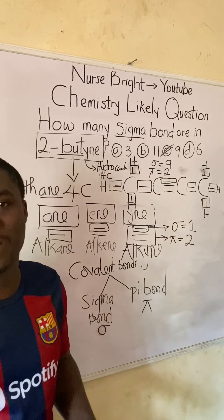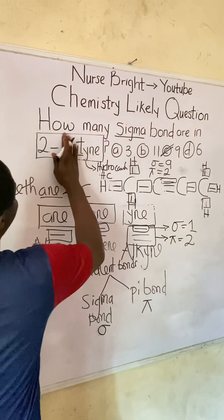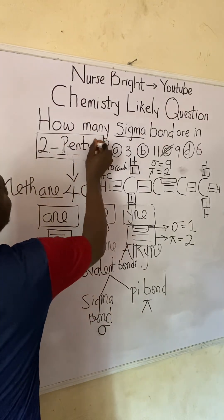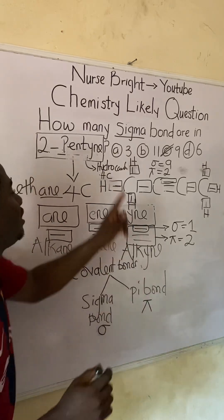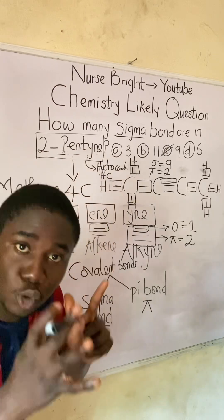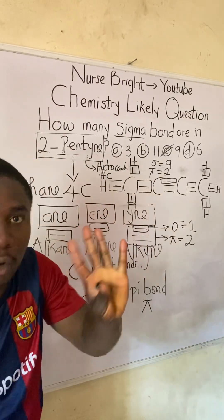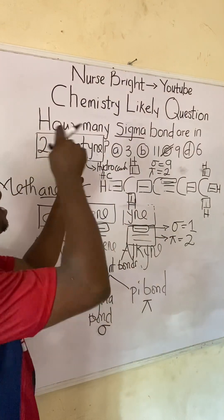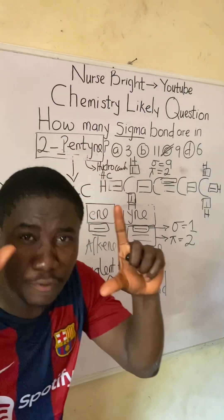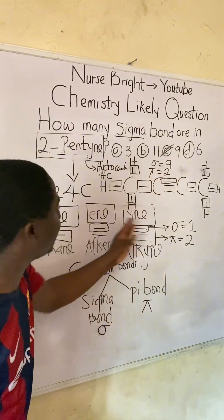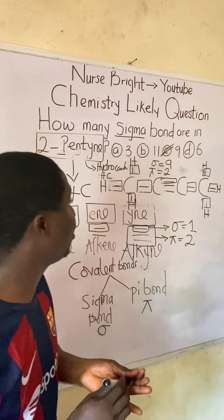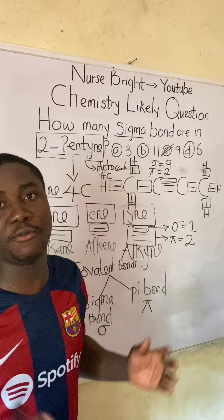Now I'm going to give you a practice question. The compound will be changed to 2-pentyne. Follow the same steps given in this video: draw the structure of 2-pentyne with five carbons, allocate your hydrogen atoms, and note that carbon 2 gets the triple bond functional group. Then determine the number of sigma bonds and provide your answer in the comment section.